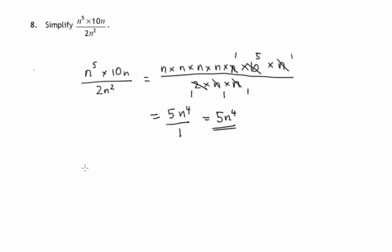There are other ways of doing it. We can use the laws of indices. On the top, we can add these two indices. And since we're dividing, we can subtract these two indices. 6 minus 2 is 4, and 2 into 10 goes 5.